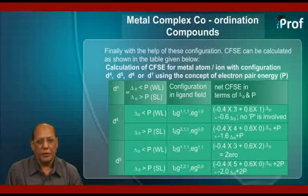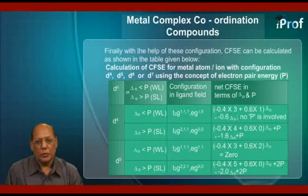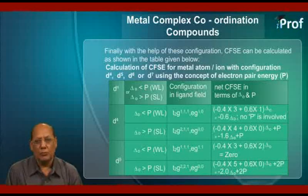Let us begin with D4 configuration. The first part is delta O less than P, that is weak ligand. The configuration in the ligand field or crystal field will be D2G111, EG10. And CFSE will be equal to minus 0.4 into 3 plus 0.6 into 1 times delta O, that is equal to minus 0.6 delta O. Note that no P term is involved.